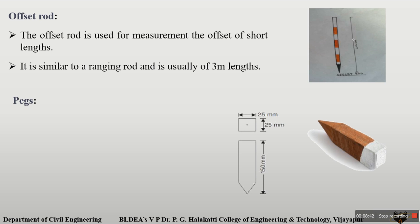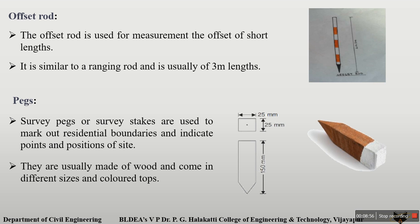Next are pegs. These are made of wooden material, sharp at the bottom and square-shaped at the top. The length of the pegs is 150 mm and the square size is 25 mm by 25 mm. The main use of pegs is for marking residential boundaries. At the top they are marked with white or different colors, which helps in finding the pegs at ground level.